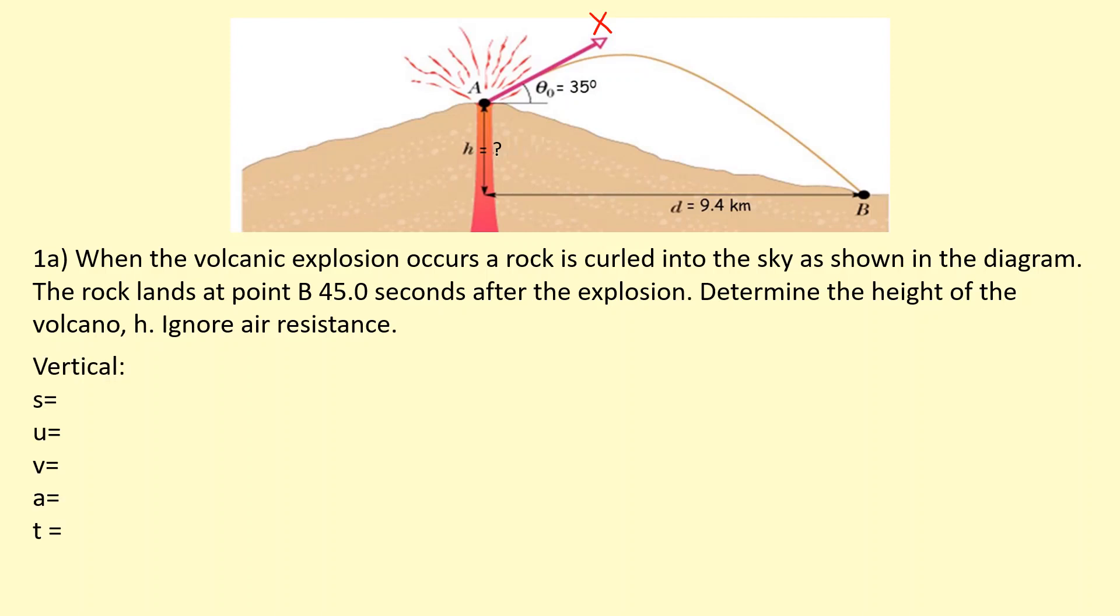We're going to resolve things horizontally and vertically. Vertical height is what we're looking for, H. The initial vertical speed, we don't know what X is, but we do know it's going to be X sine 35 because we're interested in the upward component which is the opposite of that angle. We also know that X cosine 35 will be the horizontal speed.